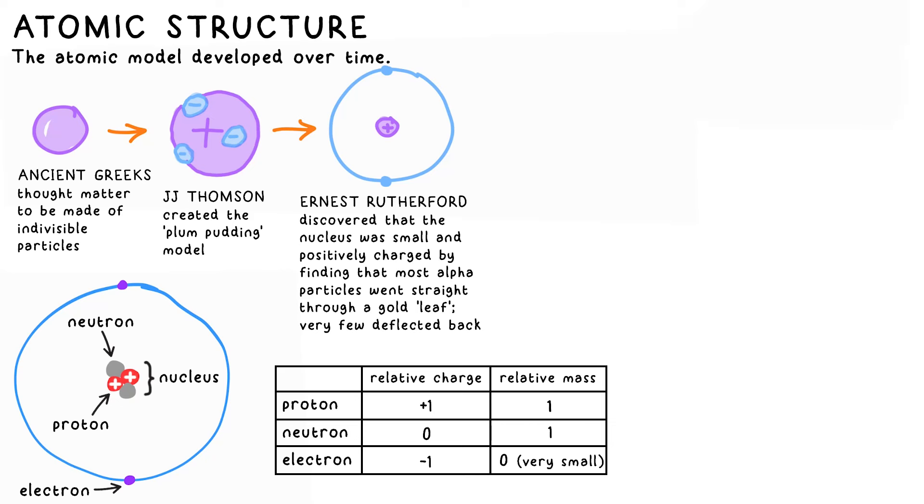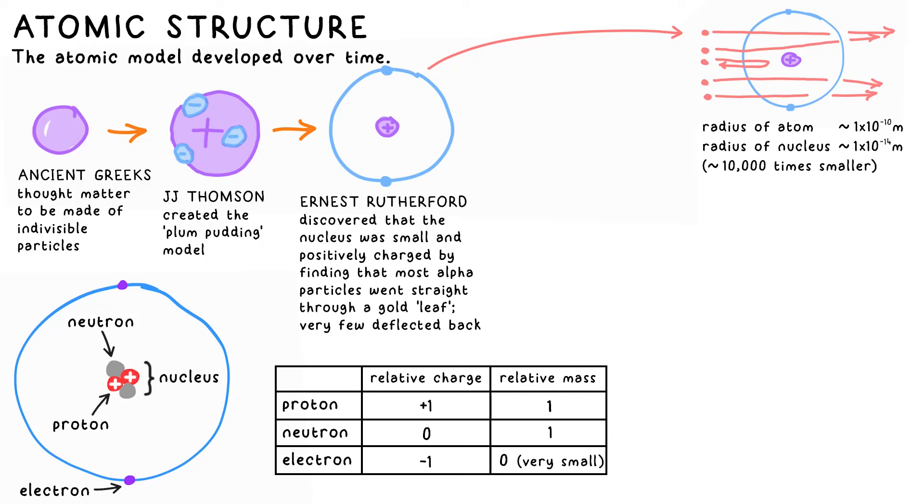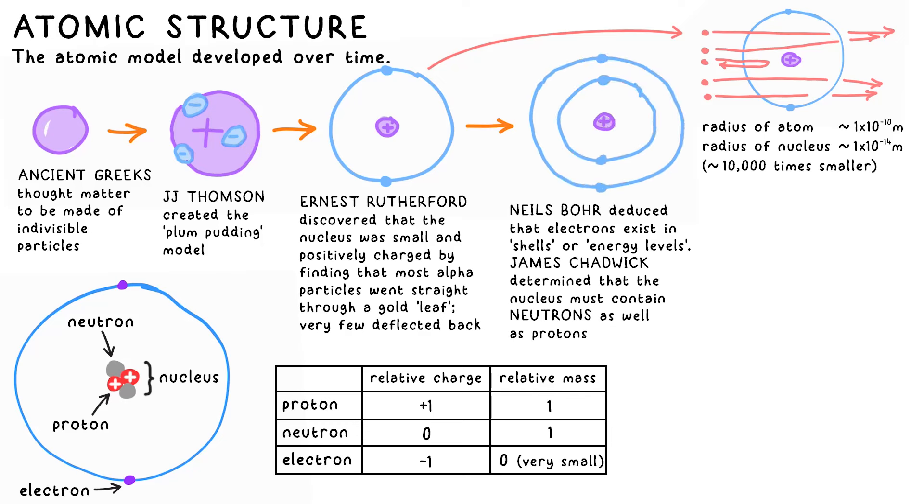It was Ernest Rutherford who found out that the positive part of the atom must be incredibly small, we now call this the nucleus, and the electrons must orbit relatively far away from it. Niels Bohr later discovered that electrons exist in shells or orbitals, and then James Chadwick discovered that the nucleus must also contain some neutral charges. He called them neutrons, while the positive charges are called protons.